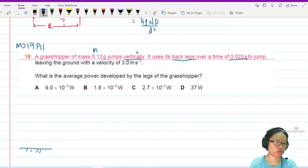You're testing me every day Cambridge - how do I draw a grasshopper? My grasshopper is going to look like a cockroach but it has large back legs. So this is my grasshopper and it leaves the ground at a velocity of 3 meters per second.